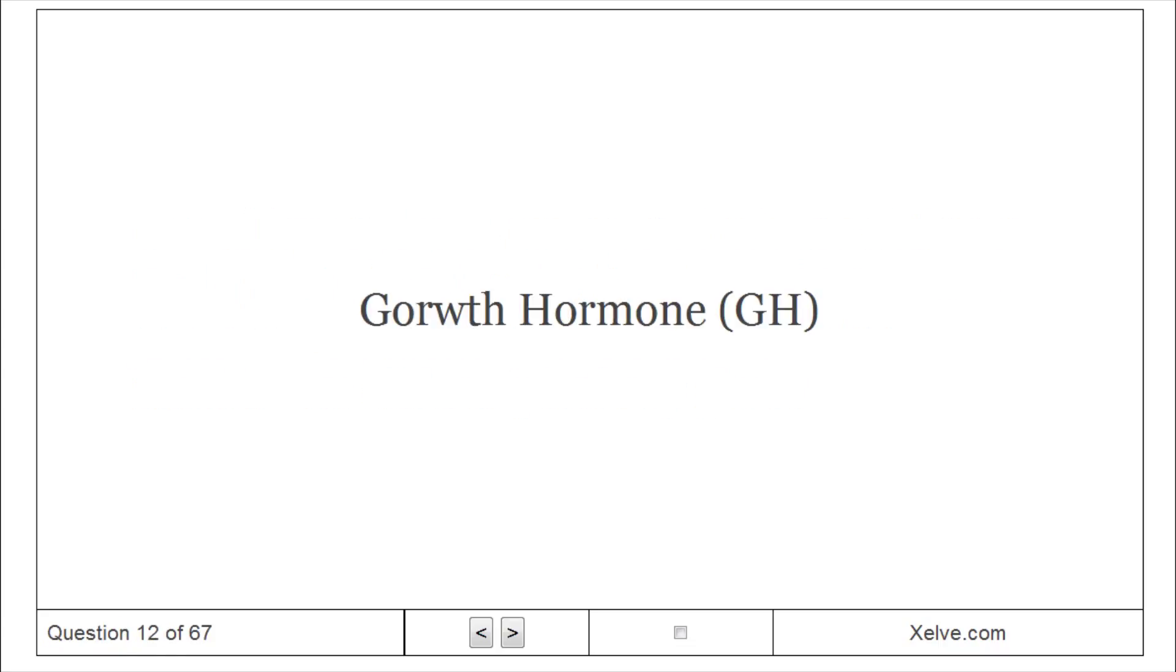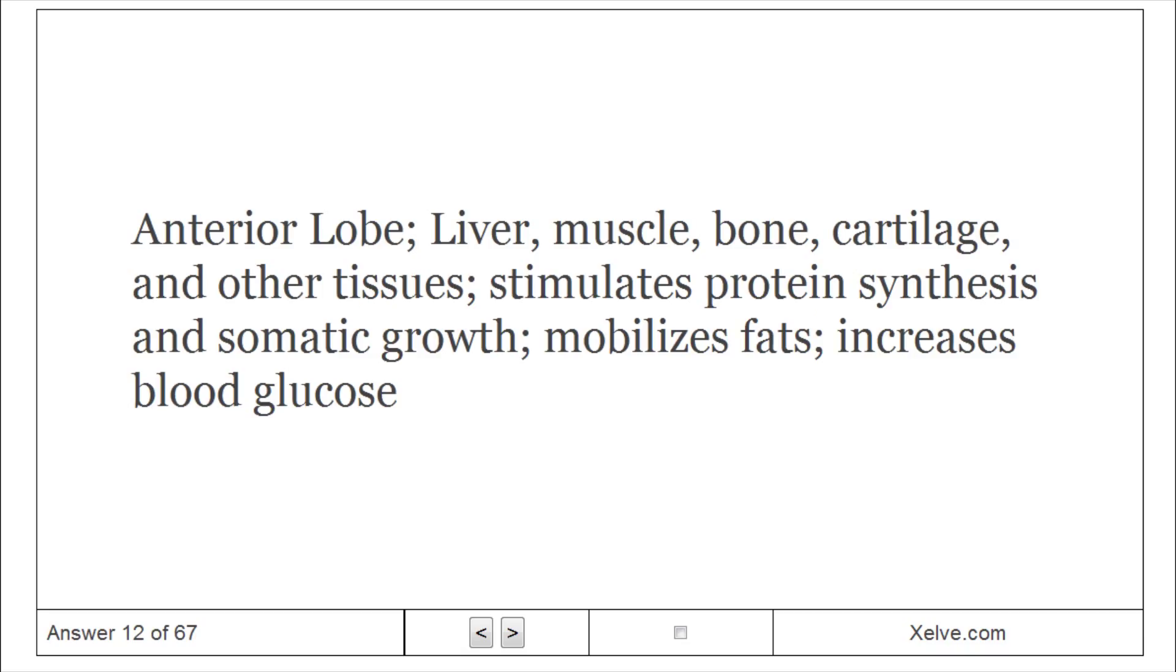Growth hormone, GH. Anterior lobe targets liver, muscle, bone, cartilage, and other tissues. Stimulates protein synthesis and somatic growth, mobilizes fats, increases blood glucose.